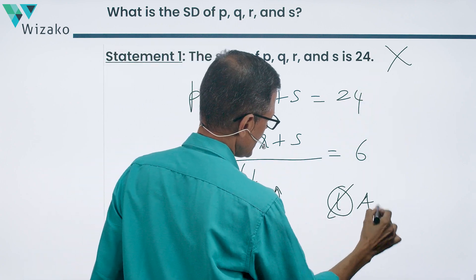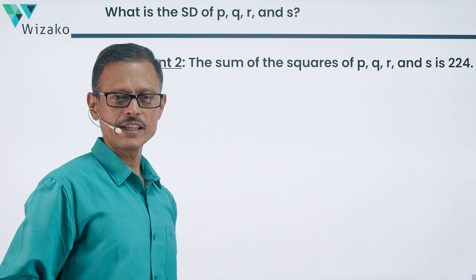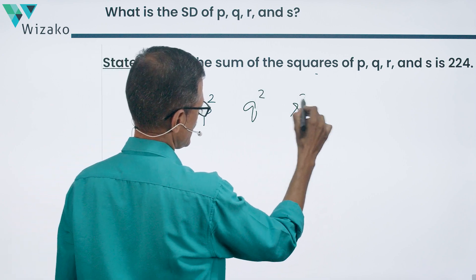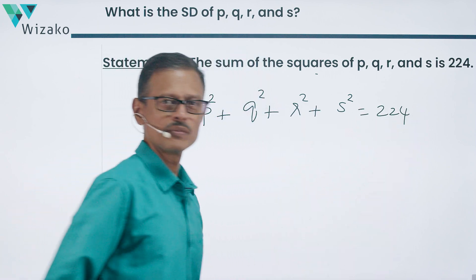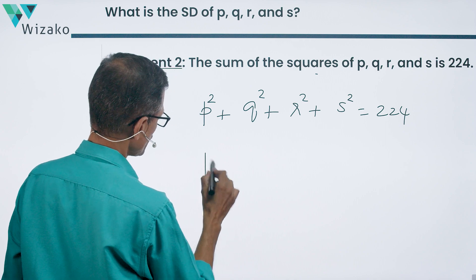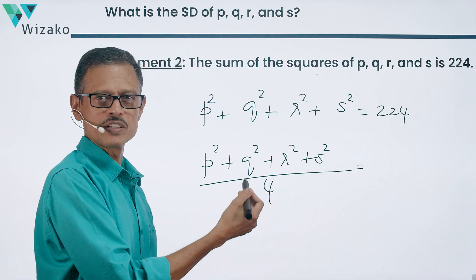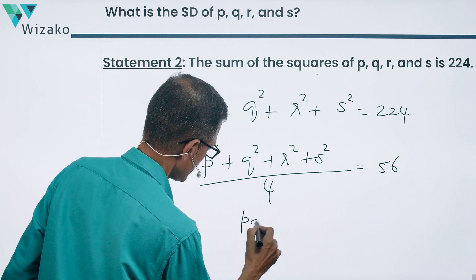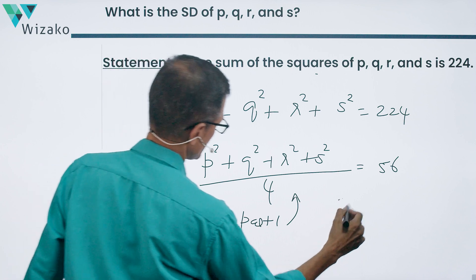Let's evaluate Statement 2 alone. Statement 2 tells us that the sum of the squares of P, Q, R, and S is 224 — so P² + Q² + R² + S² = 224. Going back to the formula, the mean of the squares is 224 divided by four, which equals 56. This gives us part one of the formula. But part two is not available from Statement 2 alone, so Statement 2 alone is not sufficient — rule out answer option B.